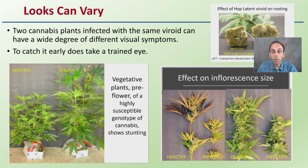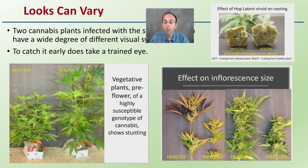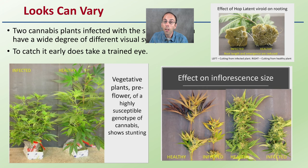I want you to understand that while the disease or viroid can be the same, the looks can vary. Two cannabis plants infected with the same viroid can have a wide degree of different visual symptoms. They'll test the same, but there are different ways they can be infected. To catch it early, it does take a trained eye, and seeing a lot of plants — and sadly, a lot of infected plants — will allow you to pick it out a little bit sooner.